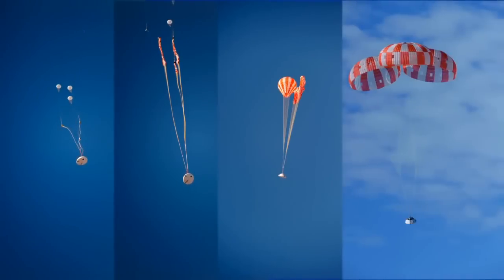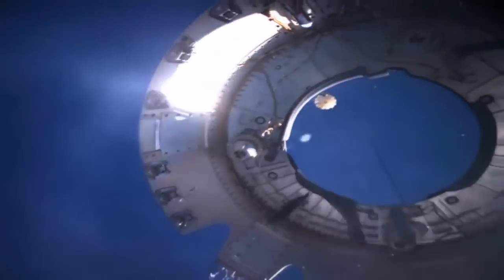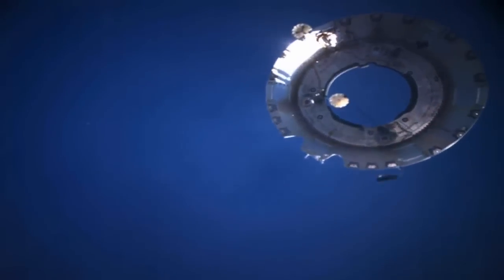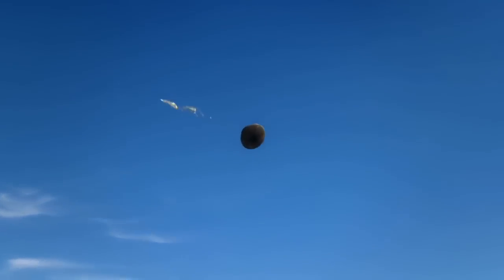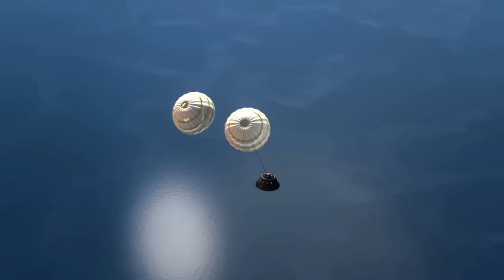Specially designed for Orion, the parachutes help us hit the brakes, but not too quickly. One day people will be aboard, so deceleration must happen in stages to keep things comfortable for the crew. The forward bay cover jettisoned. Two drogue chutes deployed and slowed the returning spacecraft down to 175 miles per hour.